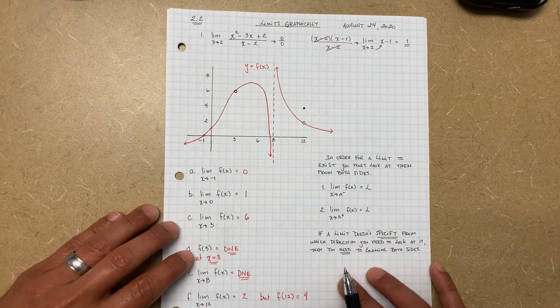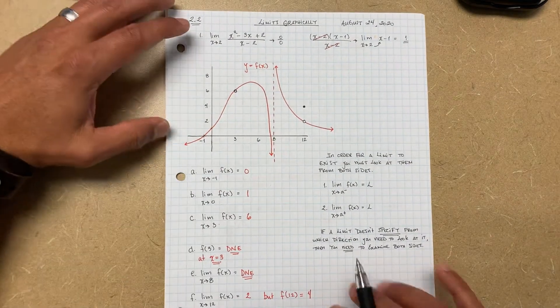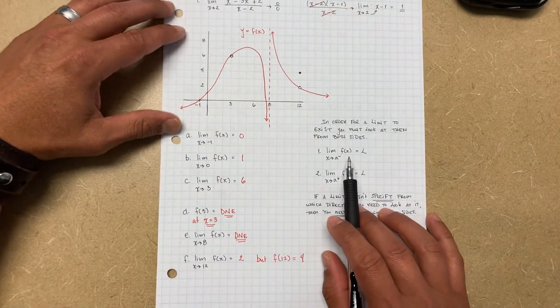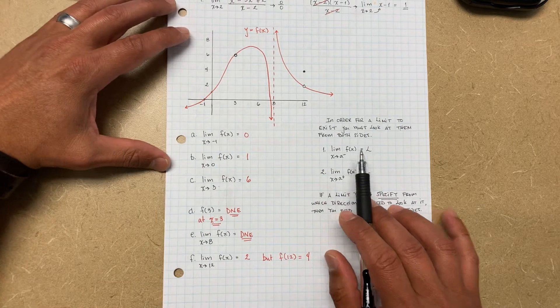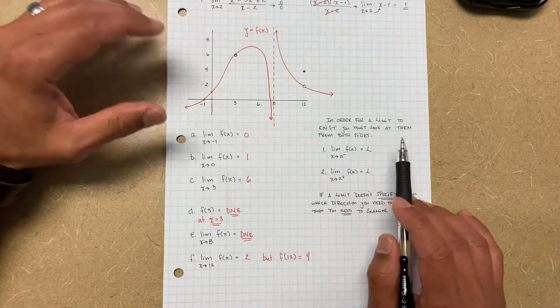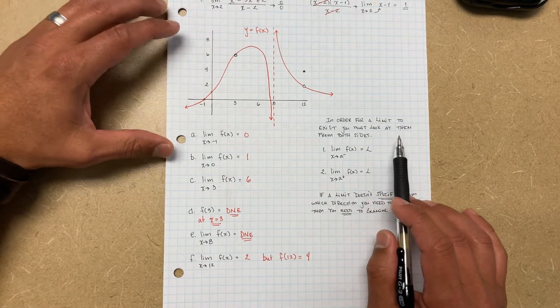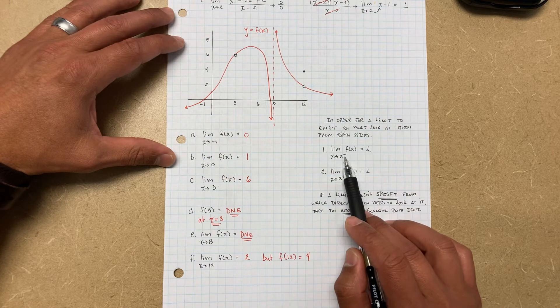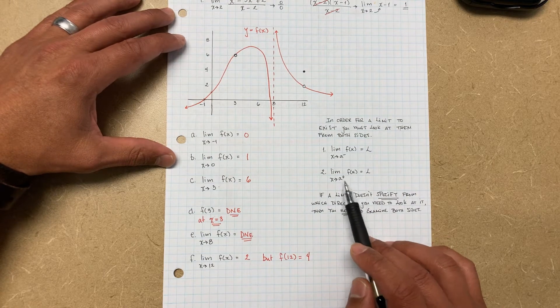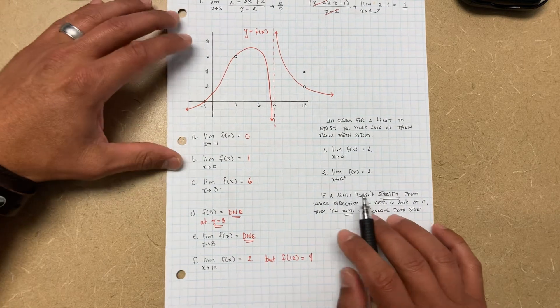Now when we evaluate limits graphically, you have to understand that you must check both sides — the left and the right. In order for a limit to exist, you have to check it from the left side and from the right side.